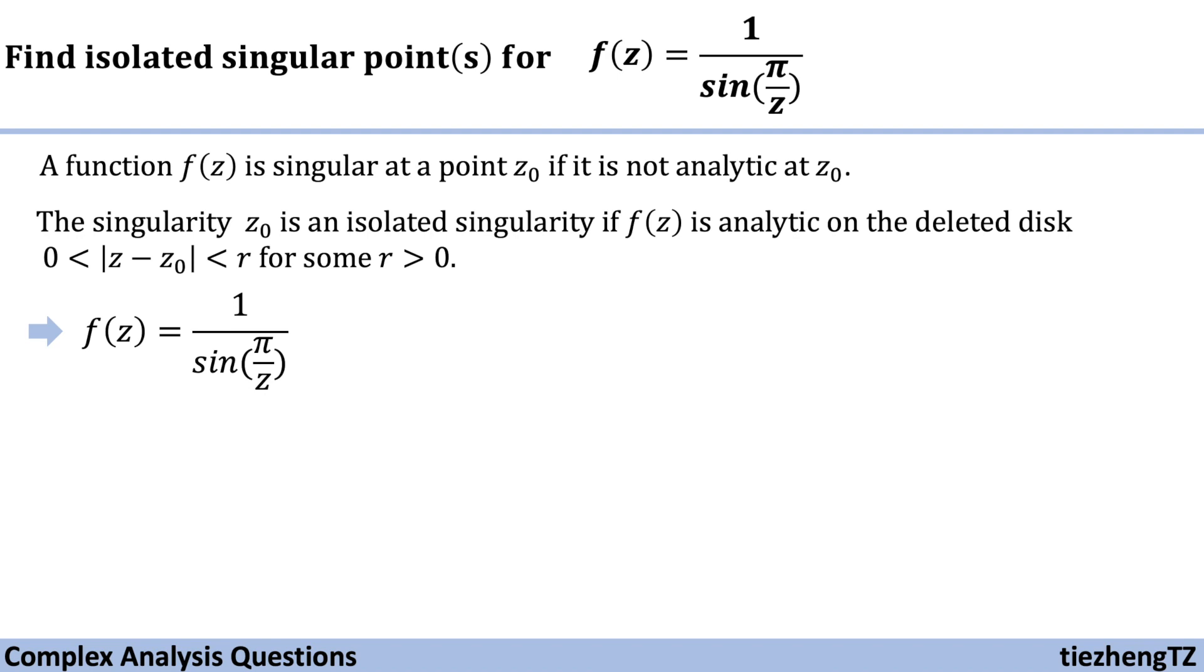Also, when sin(π/z) is the denominator, it cannot be 0. So here is the solution. This function has singularity at z equals 0 and z equals 1/n when n equals ±1, ±2, until ±∞. However...